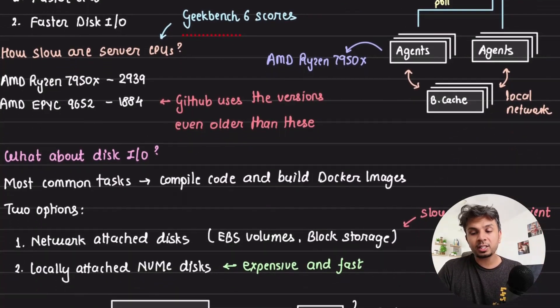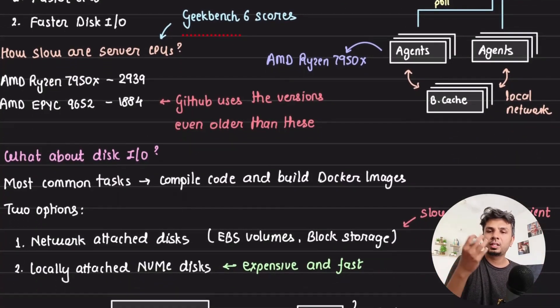In case of regular GitHub runners, the CPU on which your agents or on which your runners are running, they are typically AMD EPYC CPUs. On the other hand, the CPUs that Blacksmith uses are AMD Ryzen 7950X.